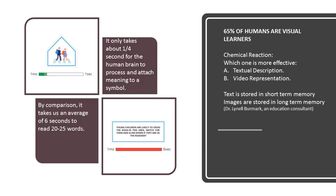For example, consider a chemical reaction. Which one is more effective? Textual description or video representation? Text is stored in short-term memory. Images are stored in long-term memory.